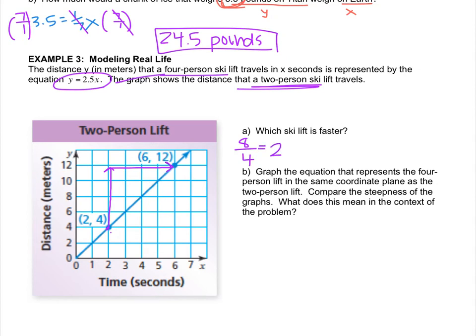The slope of the two-person ski lift is two, and the slope of the four-person ski lift is 2.5, and 2.5 is faster than two. So the four-person ski lift is faster because it has the bigger slope. You don't have to say why, but I figured, to make us all smarter, I would write down, because it has a bigger slope.